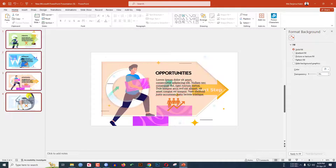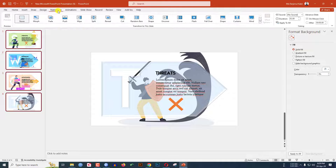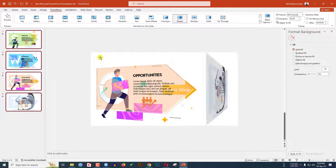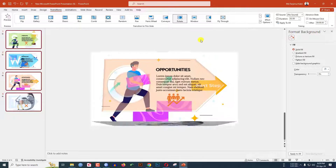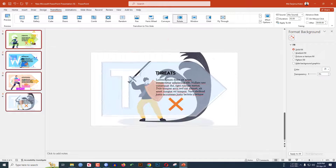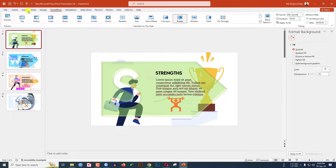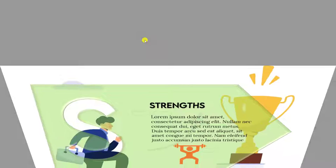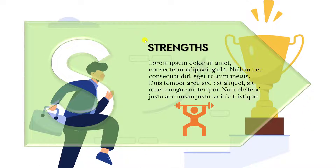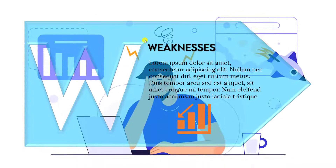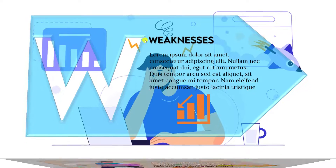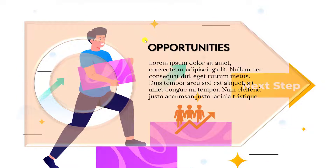Now let me select all four slides, go to Transitions, click on Rotate, and from the Effect Options click From Bottom. Now go to my first slide and let me watch the slideshow. This is looking beautiful — this one is also very beautiful, this is looking very beautiful, this one also perfect.